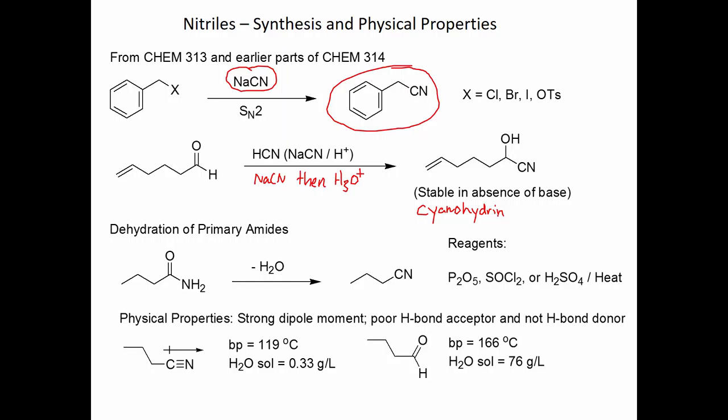We'll look at one new method, and that is the dehydration of primary amides. If you have a primary amide, you can take water out of the amide by treating it with one of these dehydrating agents here. P2O5, SOCl2, or anhydrous sulfuric acid and heat will all dehydrate the amide to give you the nitrile.